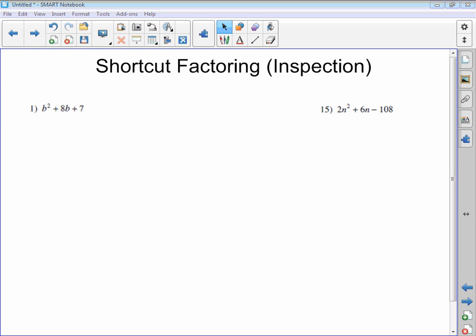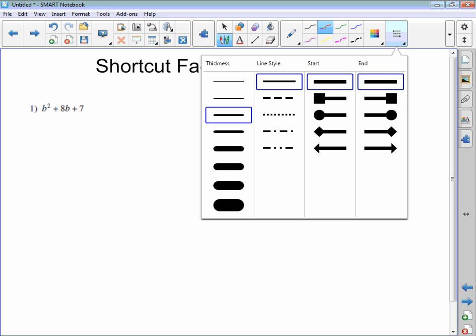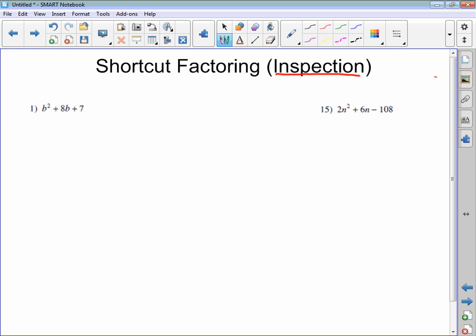The second kind of factoring we have to be able to do for dash 1 and dash 2 is shortcut factoring. It's also sometimes called factoring by inspection. We call it inspection because we don't have to do a lot of algebra here to prove it.